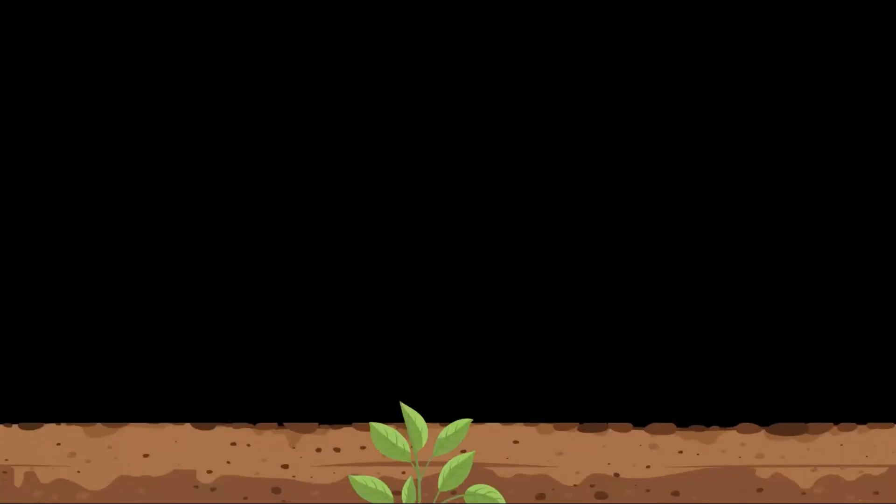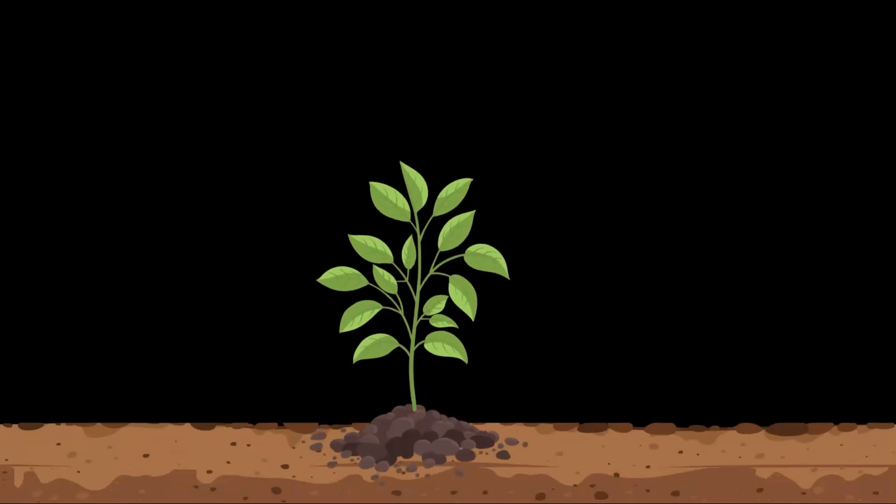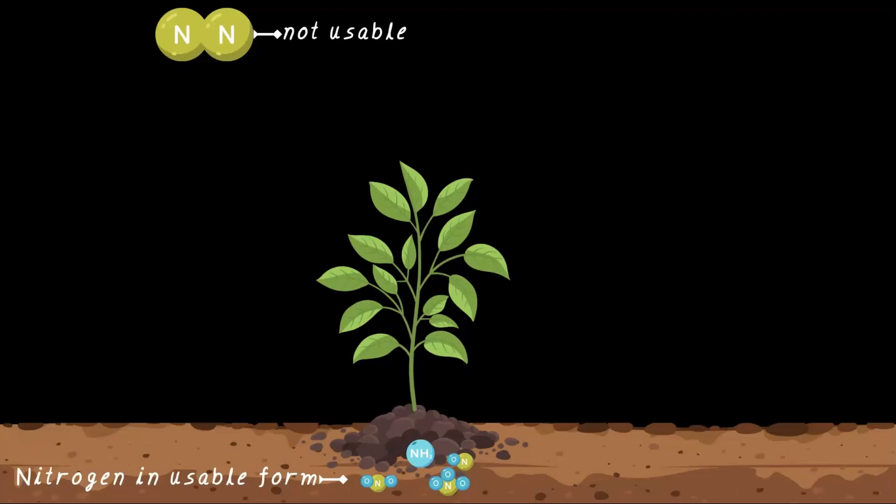In our video discussing nitrogen fixation, we saw that nature has two amazing ways of converting atmospheric nitrogen, which is actually not in a usable format, to usable form—basically compounds of nitrogen and oxygen.